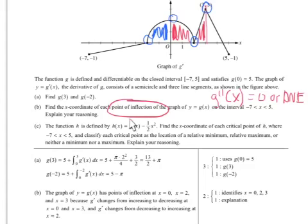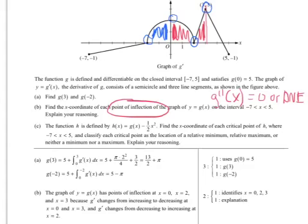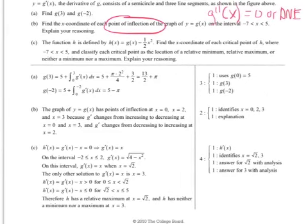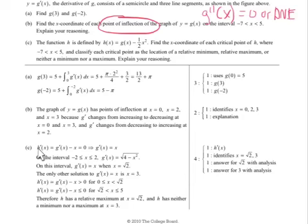Now, h is this function. Find the x-coordinates of each critical point of h on this interval, and classify each critical point as a relative min, relative max, or neither. To find critical numbers, you take the derivative and set equal to zero or undefined. The derivative of g is g prime, and the derivative of the x² term is just negative x. So the derivative of h is g prime(x) minus x. To find where it equals zero, add x over and look where g prime(x) equals x.